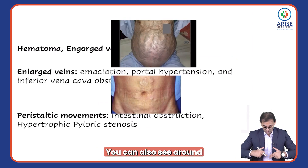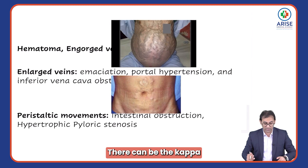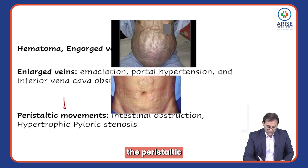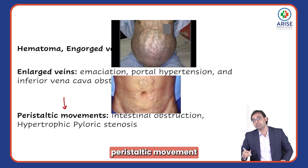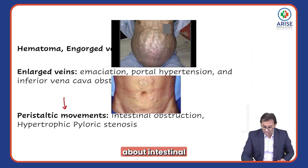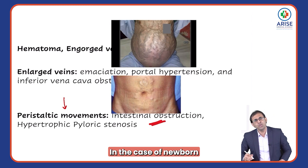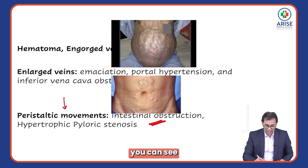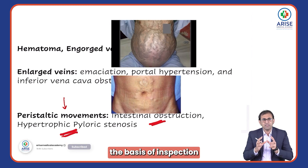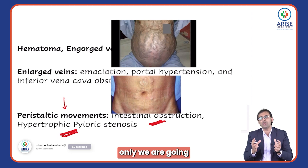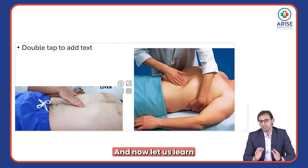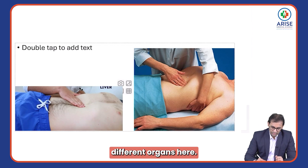On the basis of inspection we can diagnose so many things. You can also see engorged veins and hematoma. Around the umbilicus there can be caput medusae. You can also see peristaltic movement — if you can see peristaltic movement, you can have some idea about intestinal obstruction, or in a newborn baby, especially a male child, hypertrophic pyloric stenosis.